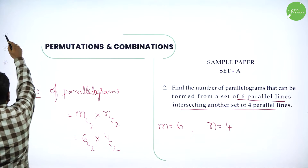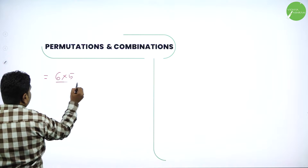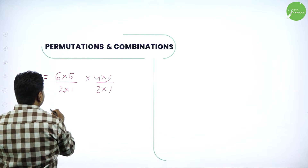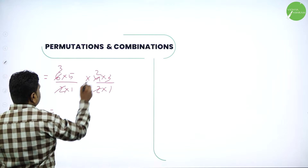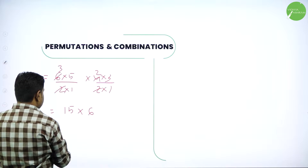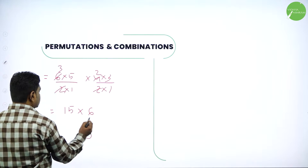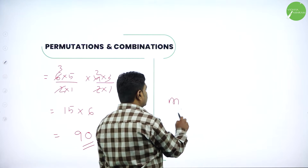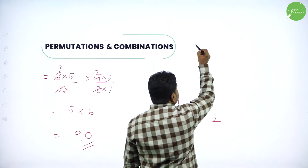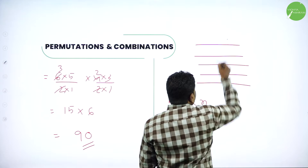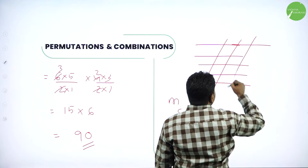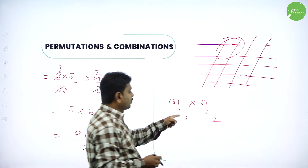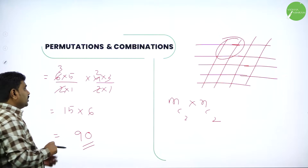Simplify: 6C2 is 6 into 5 divided by 2 into 1. 4C2 is 4 into 3 divided by 2 into 1. So we get 15 into 6, which is 90. The logic here is MC2 into NC2, because from two different sets, when two lines from each set intersect, they form a parallelogram. That's why we combine two from each.